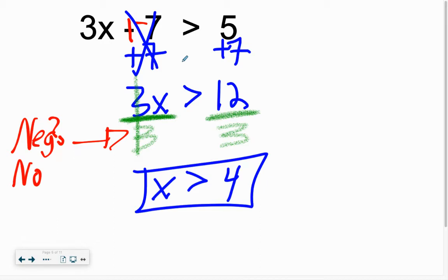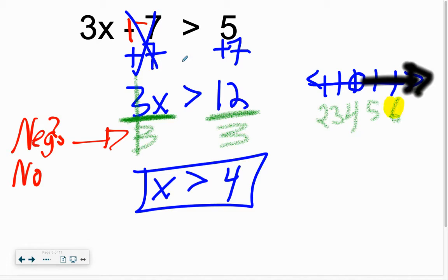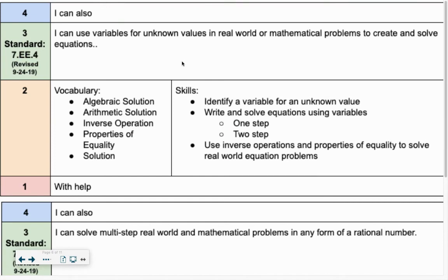Did we multiply by a negative? Since we did not, keep it the same. x greater than 4. Graphing: the number comes from our answer. 4 in the middle. It's an open circle because it's just x is greater than 4. Since it's greater than 4, we shade right. Check: is 6 greater than 4? Yes.